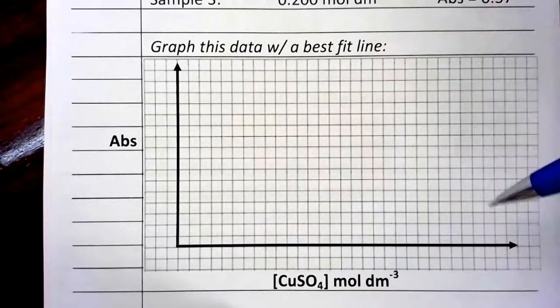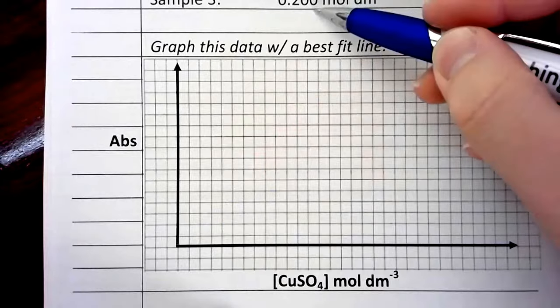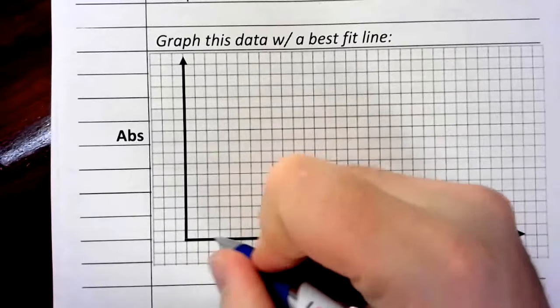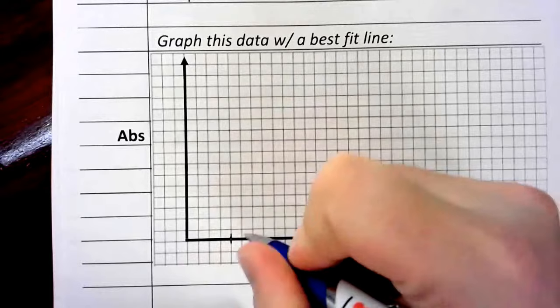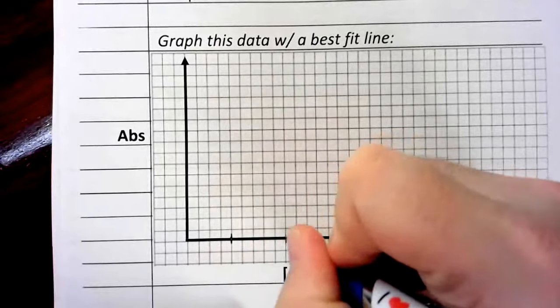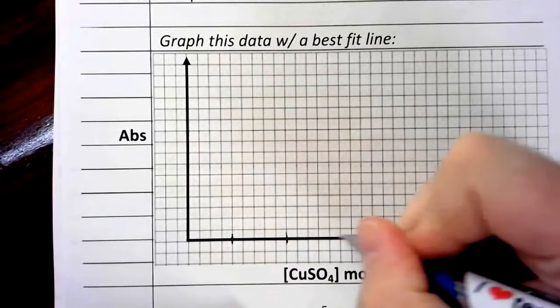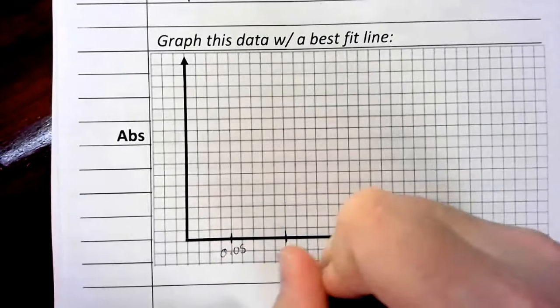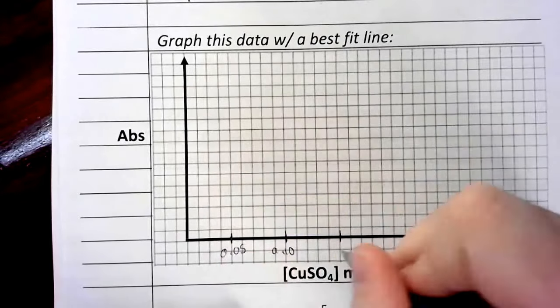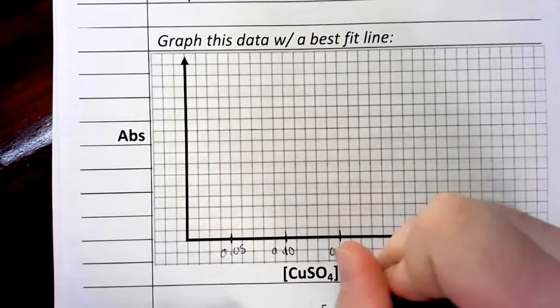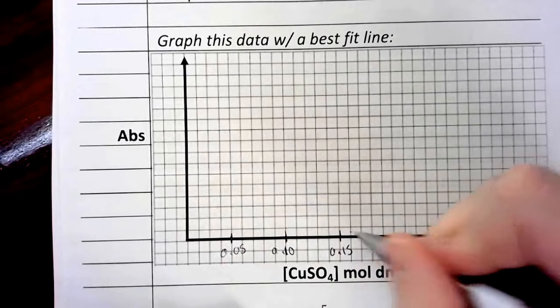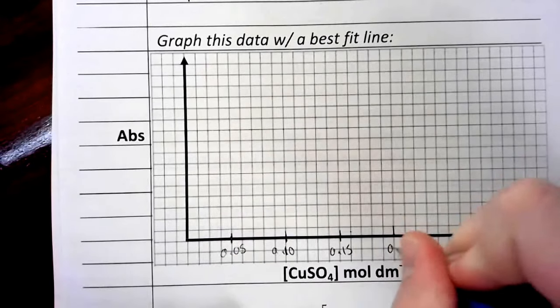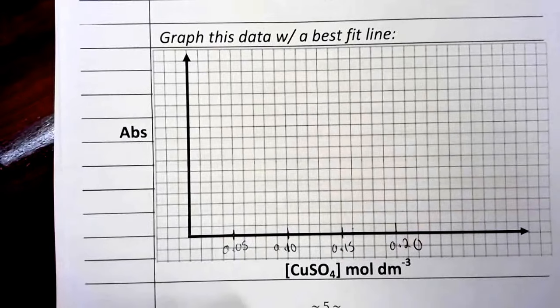Now, if I were going to graph this, my concentrations range up to 0.2. So, I'm going to divide this out in groups of five. This is going to be 0.05. This is going to be 0.10. This is going to be 0.15. And then I'm going to make this one my 0.20. So, I'm trying to spread this graph out a little bit, make it easier to read. And then the absorbances go up to roughly 0.4. So, to make life easier, because I'm going to run out of space otherwise, I'm going to do the absorbances in groups of four.